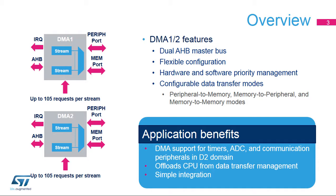The two identical instances of direct memory access, named DMA1 and DMA2, embedded on the STM32 MP1 series, are used to provide high-speed data transfers between peripherals and memory, and between memory and memory. Data can be quickly moved by the DMA without any CPU action, keeping CPU resources free for other operations. The DMA controller combines a powerful dual-AHB master bus architecture with an independent FIFO to optimize the system's bandwidth, based on a complex bus matrix architecture.